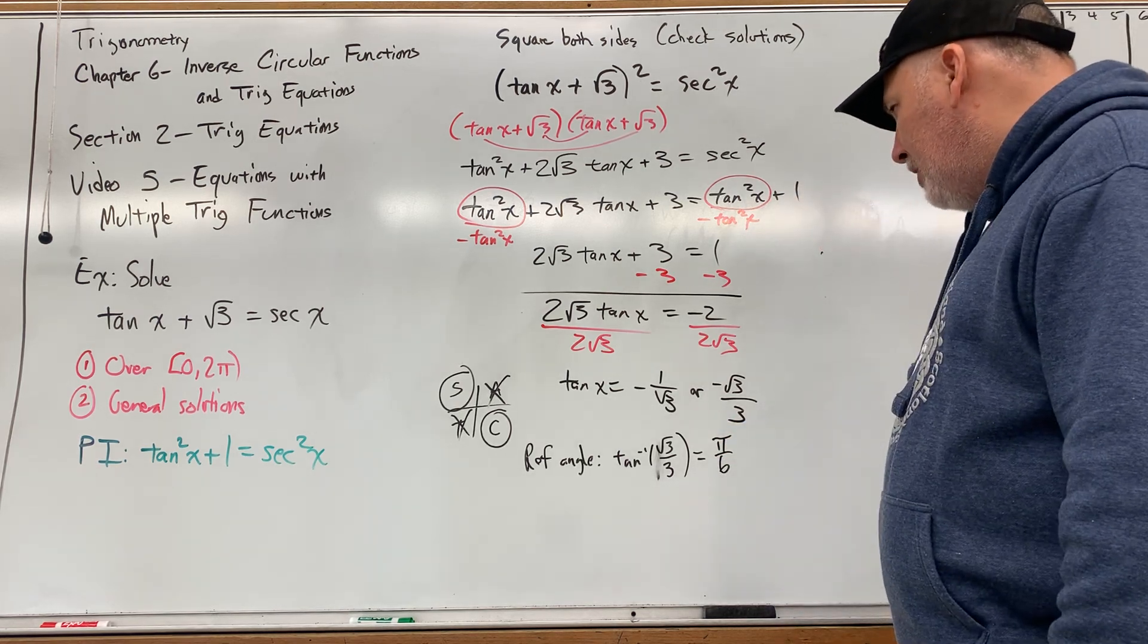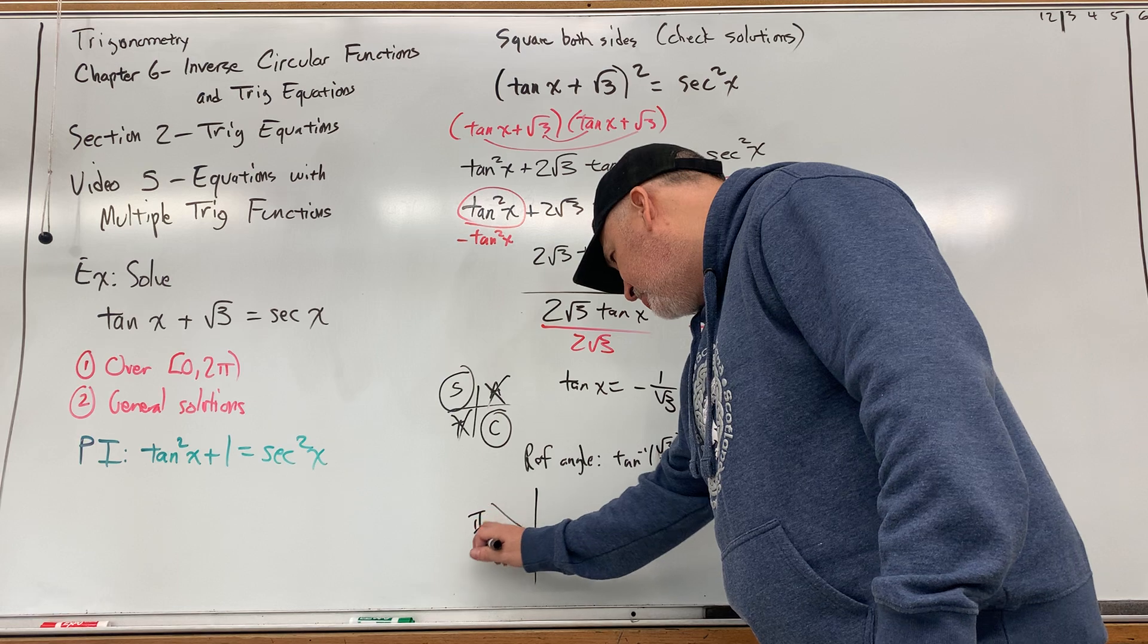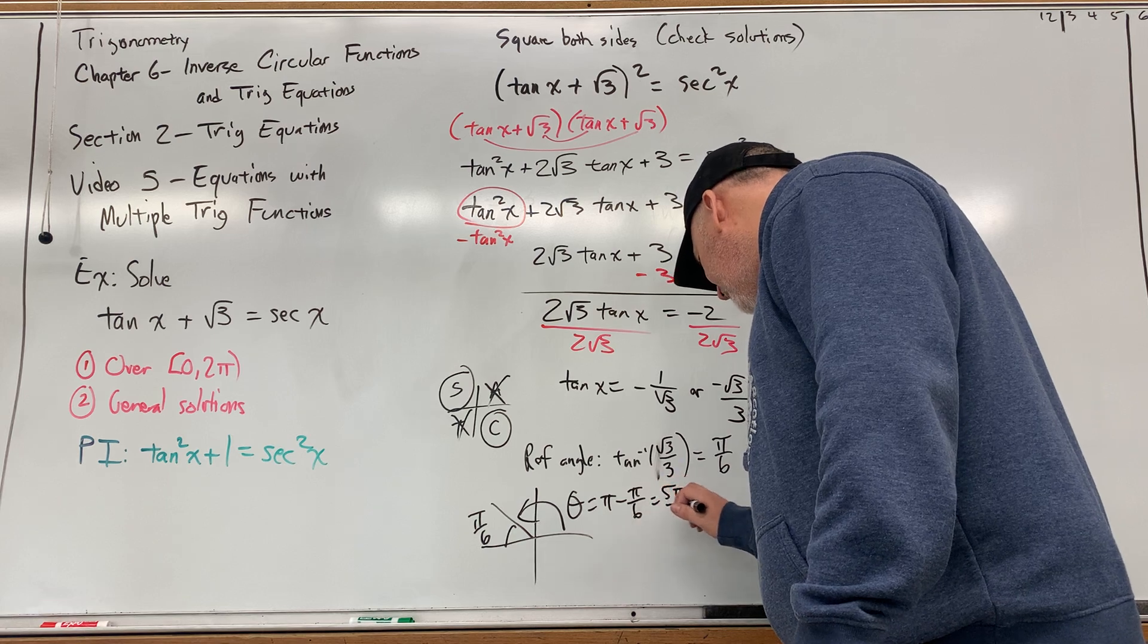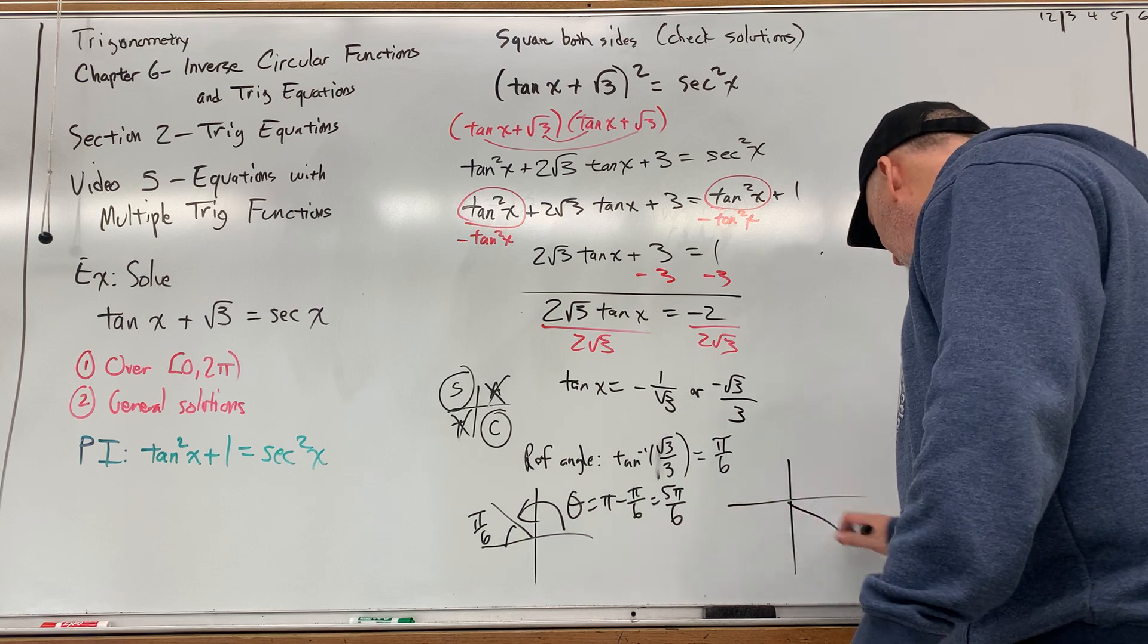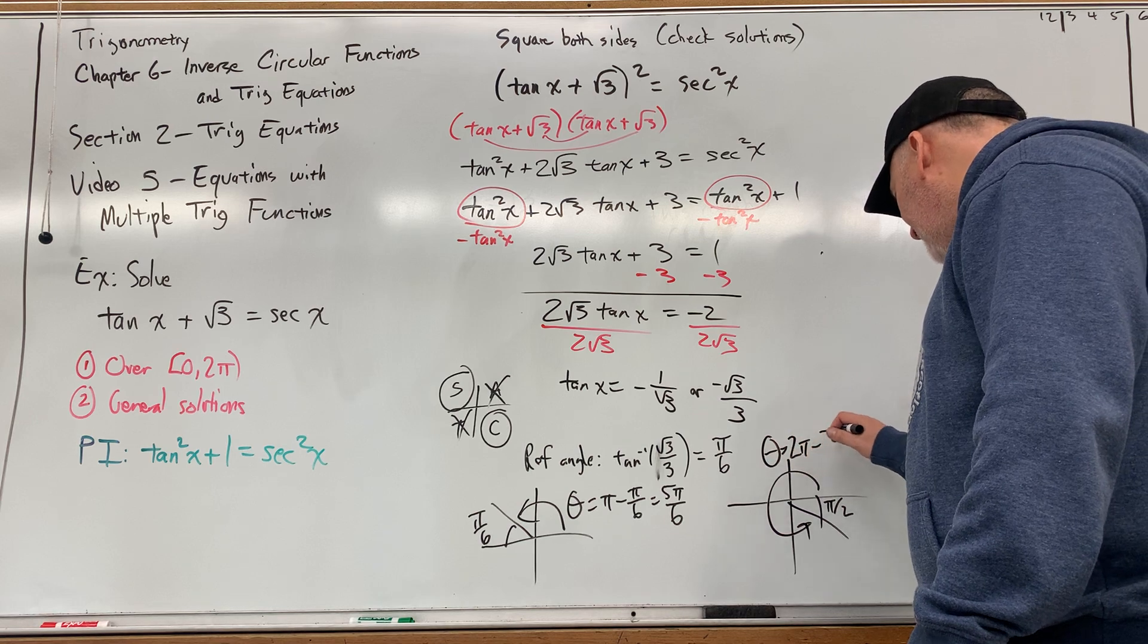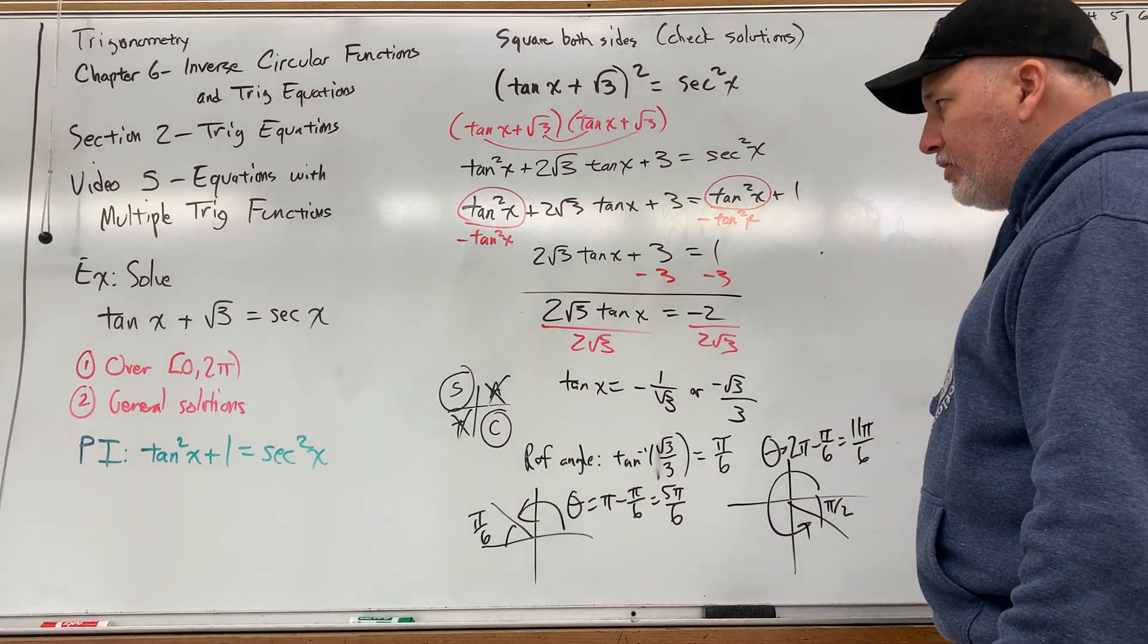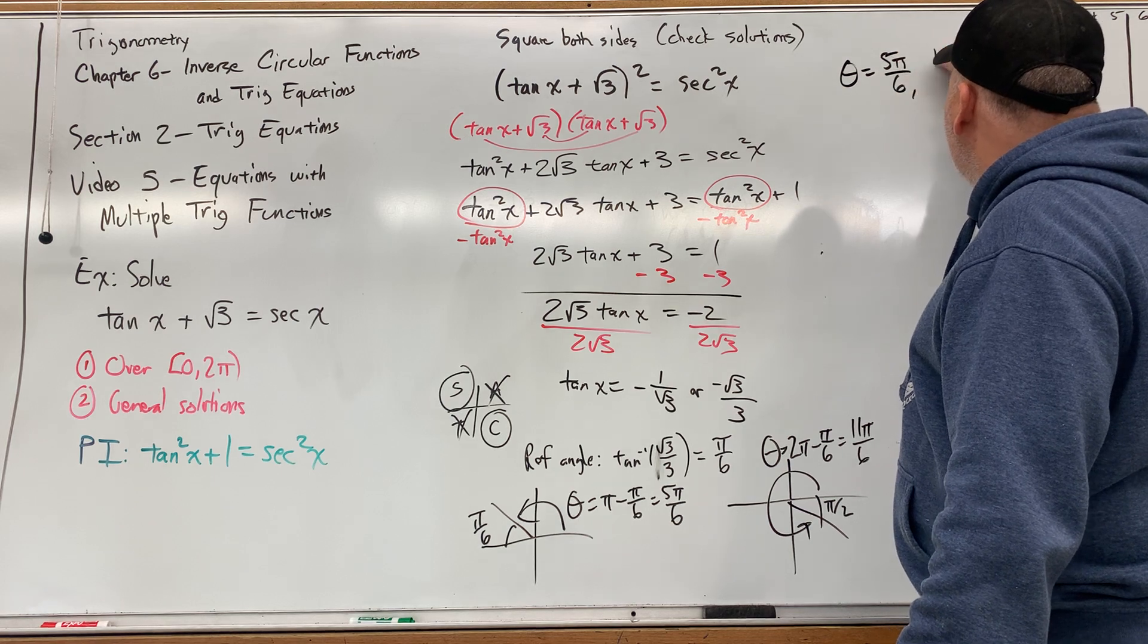So we're going to place pi over 6 as a reference angle in both quadrants 2 and 4. In quadrant 2, when we place pi over 6 as a reference angle, then our actual angle here is pi minus pi over 6, which is 5 pi over 6. And when we put the reference angle in quadrant 4, pi over 6, and then measure it from standard position, then that angle is 2 pi minus pi over 6, which is 11 pi over 6. So our possible specific solutions in one period of secant are theta equals 5 pi over 6 and 11 pi over 6.